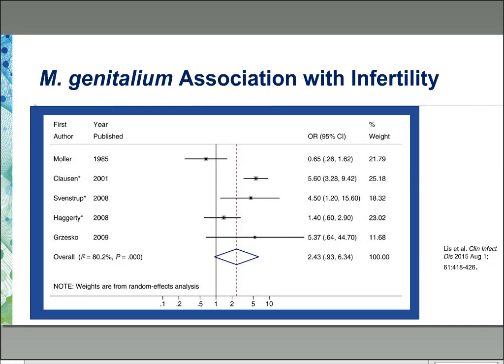In the same meta-analysis, five studies looked at MGEN and infertility among women presenting to fertility clinics, comparing confirmed tubal factor infertility to other causes identified through laparoscopy. The pooled odds ratio for infertility was 2.43, meaning women with MGEN infection had a 2.5-fold increased risk of subsequent infertility.